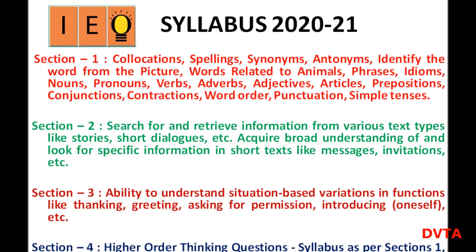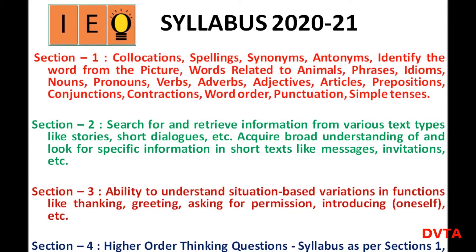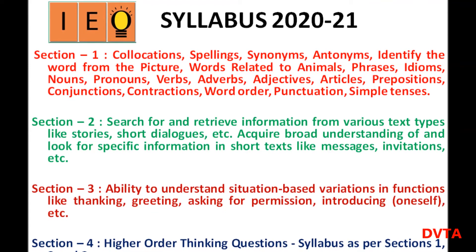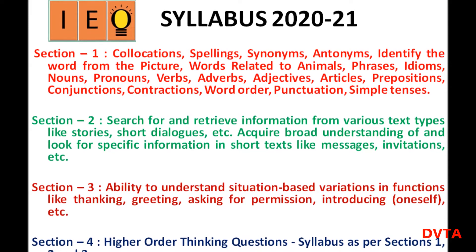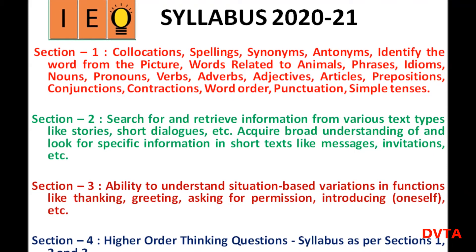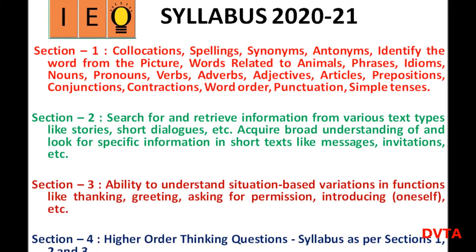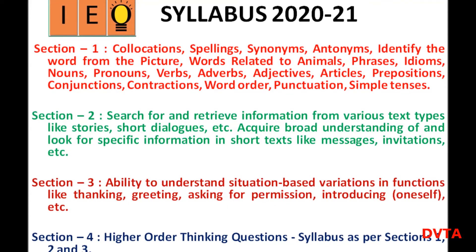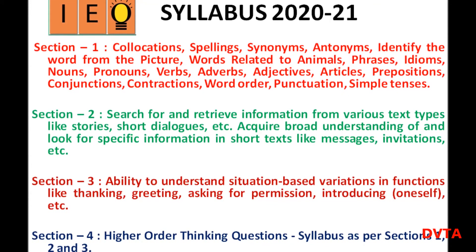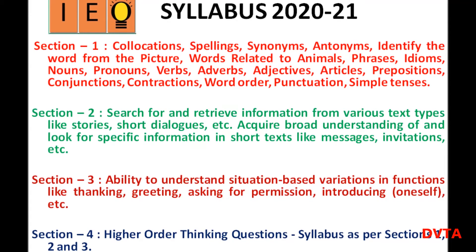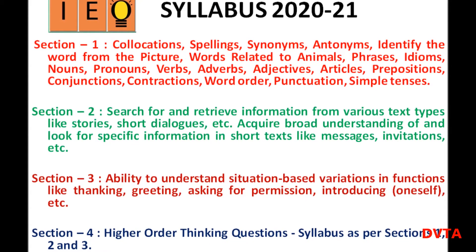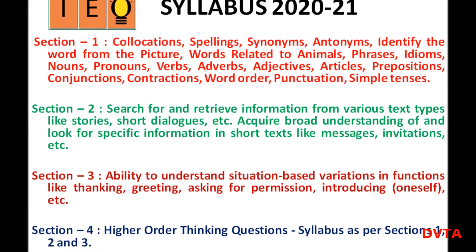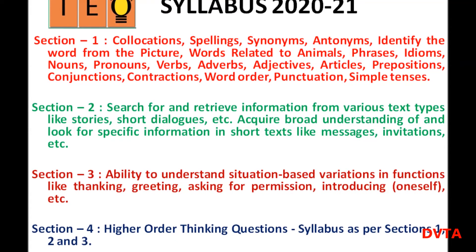Section 1: Collocations, spellings, synonyms, antonyms, identify the word from the picture, words related to animals, phrases, idioms, nouns, pronouns, verbs, adverbs, adjectives, articles, prepositions, conjunctions, contractions, word order, punctuation, simple tenses.